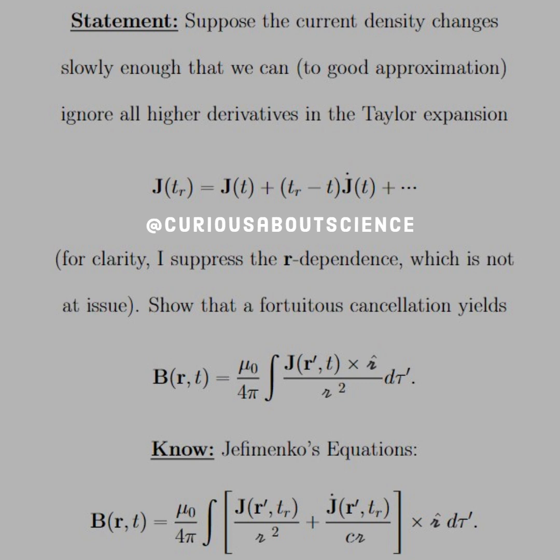We do a similar method with the current density. Suppose that the current density changes slowly enough that we can, to a good approximation, ignore all higher derivatives in the Taylor expansion.